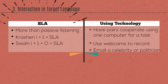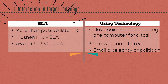Swain later came up with the output hypothesis. Swain agrees with the I plus one, but her research indicated that true language competency did not occur until spoken output was produced. She revised the equation to I plus one plus O equals SLA. She suggested that sometimes students needed to be pushed to speak — not by bullying or shaming them, but by providing strong intrinsic and extrinsic motivation. For example, asking students to record a presentation using a webcam is often less scary than standing in front of a class. Or get students talking to each other to complete a task on the computer, such as one being the driver with the mouse and keyboard, and the other the navigator with the instructions.